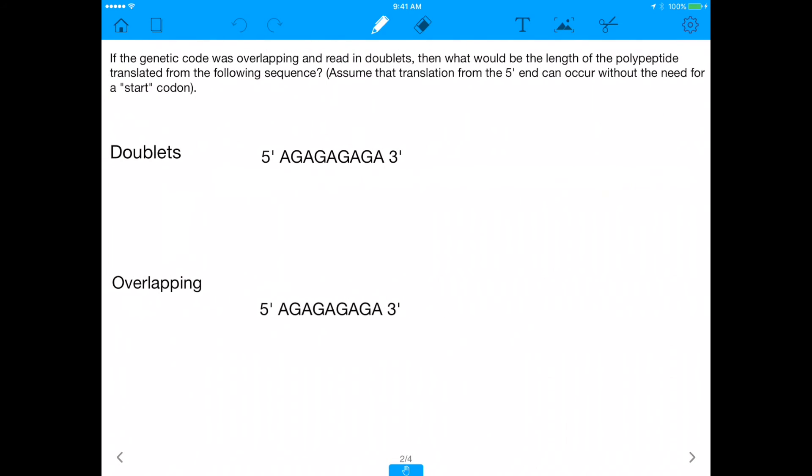But now let's talk about this problem, which is telling us if the genetic code was overlapping and read in doublets, what would be the length of the polypeptide translated from the following sequence? So what do I mean by doublets? What I mean by doublets is that two nucleotides here, two nucleotides like this A and G, is enough to code for one amino acid. Before I was talking about triplets, but if we were assuming doublets, I would have to assume that two nucleotides can lead to one amino acid. So that's what I mean by doublets.